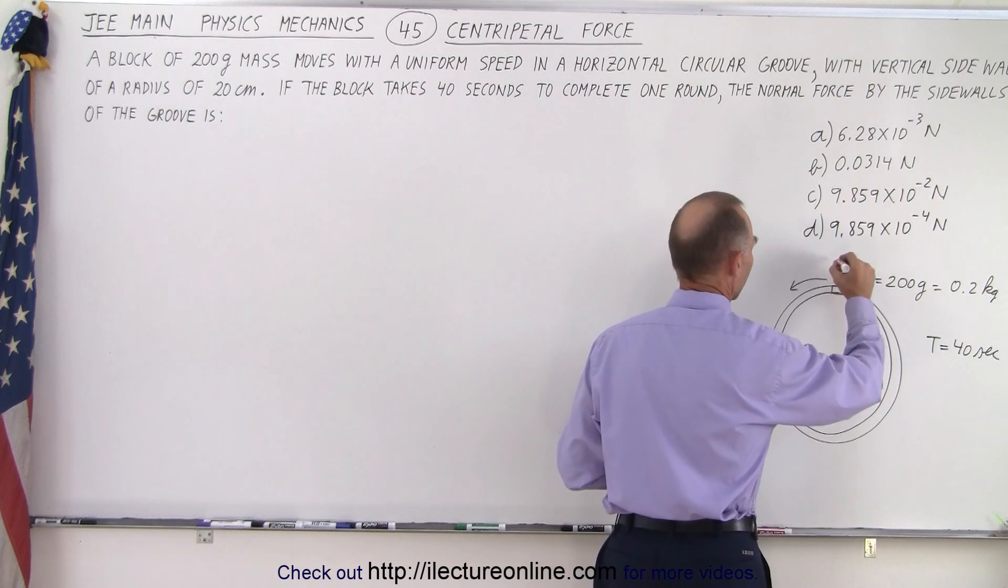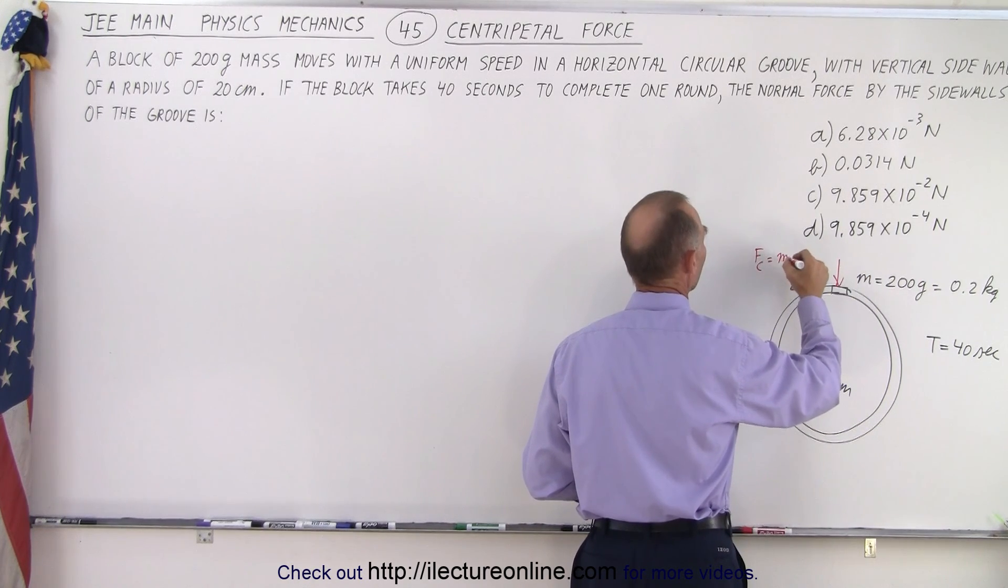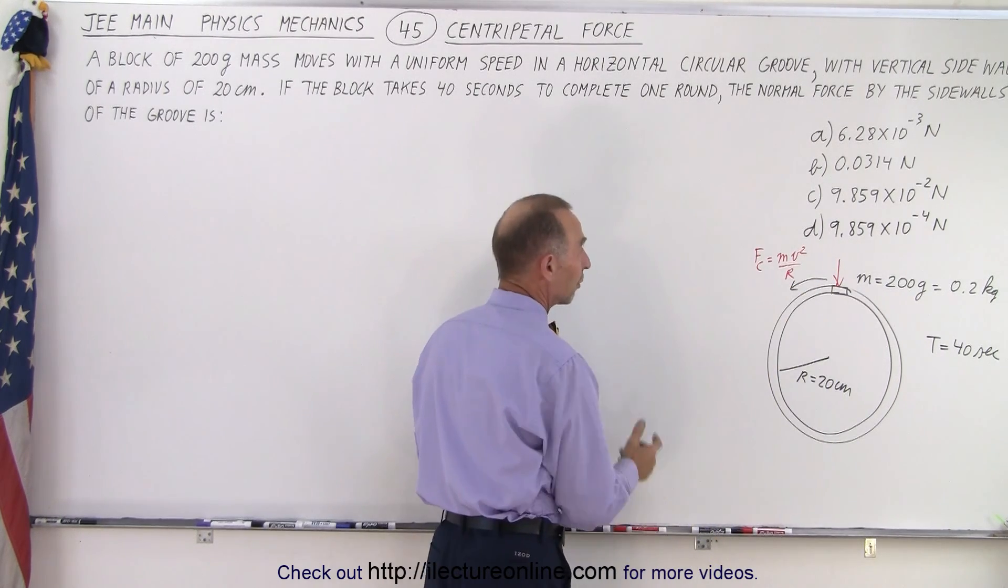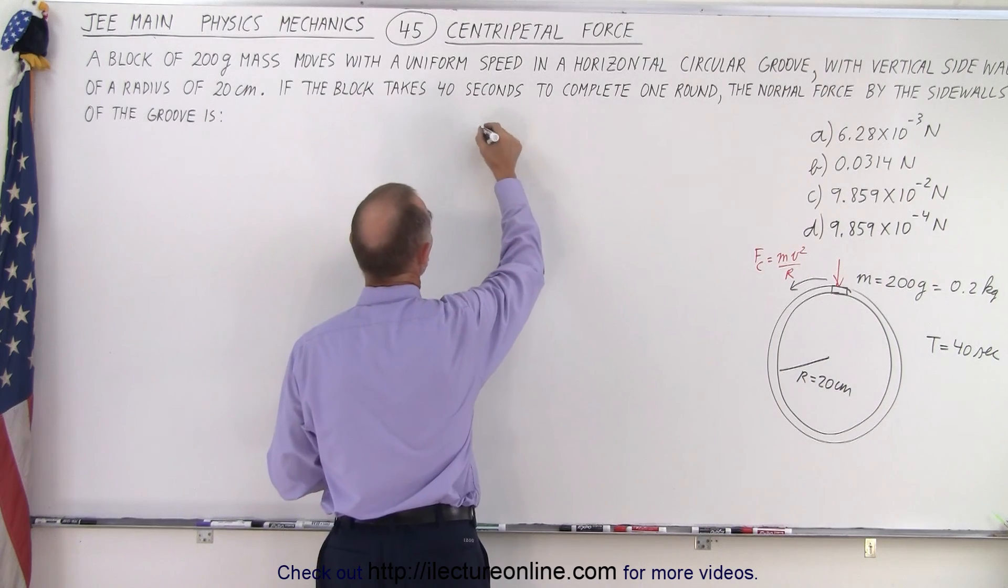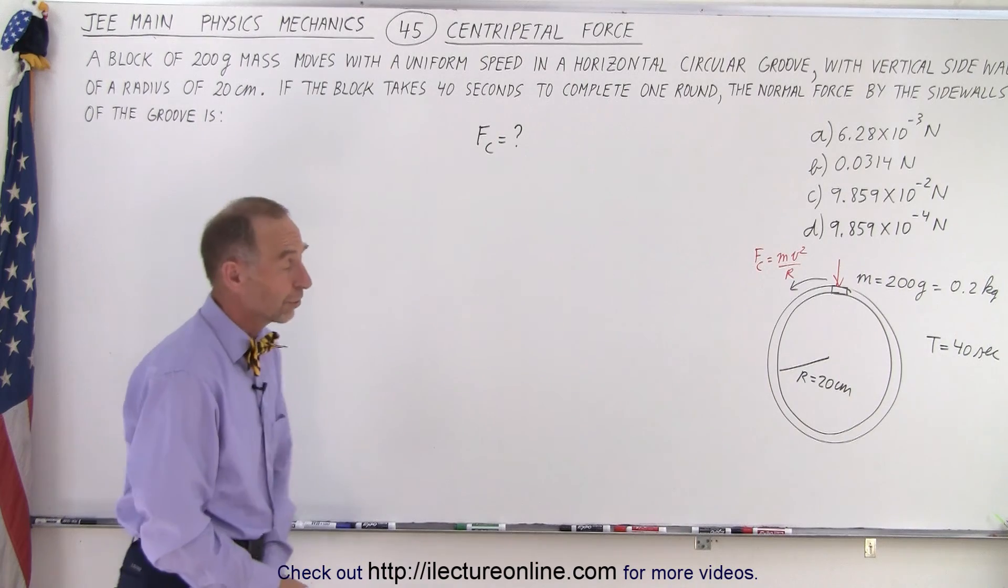And it is the side of the groove that's keeping it going around in a circle, which means we have centripetal force, F_c, which is equal to mv² over r. All right, so that's what we're looking for. We're finding the centripetal force, F_c equals question mark. And it's one of those four answers.